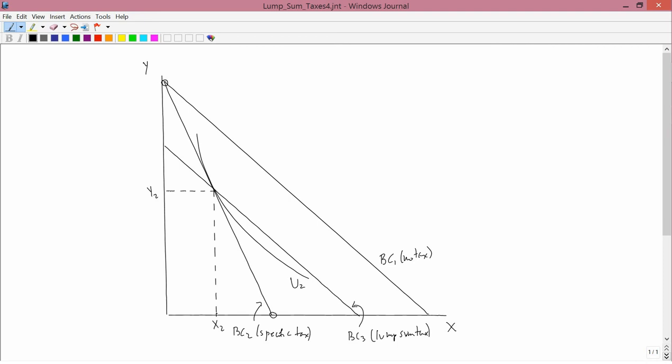Now that we have proven where BC3 is, I've drawn a very careful diagram illustrating the situation. We started out with BC1 with no taxes, then we went to BC2, the specific taxes. On BC2 the consumer decided to go to X2 and Y2 because that was the utility maximizing point given BC2 and BC2's affordable set.